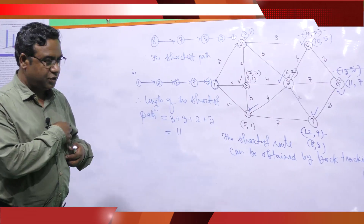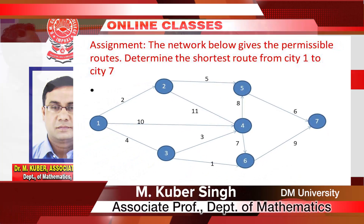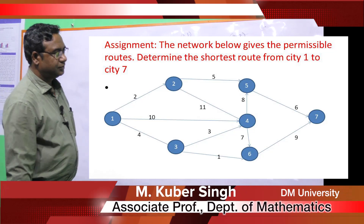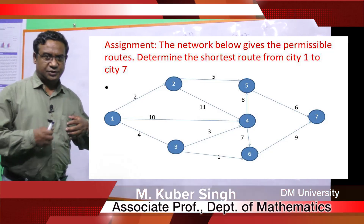I will give you one assignment: the network below gives the permissible routes — determine the shortest route from CT1 to CT7. If we can find the shortest path, it can save time and money. This is the advantage of the shortest route method. Thank you.